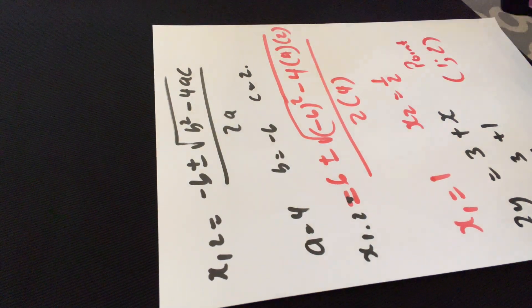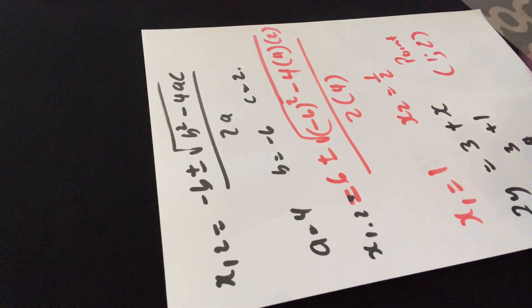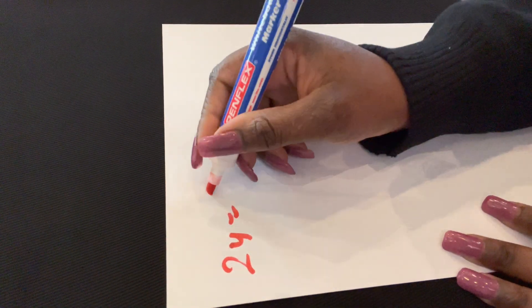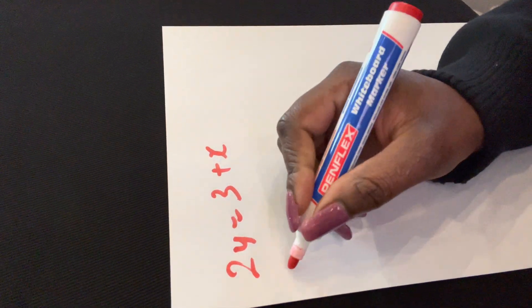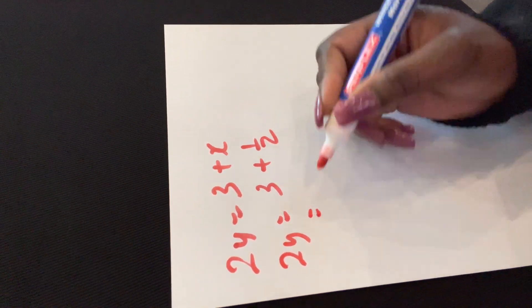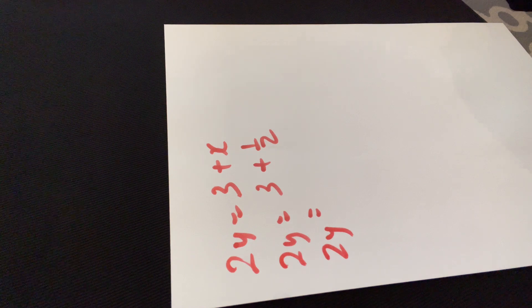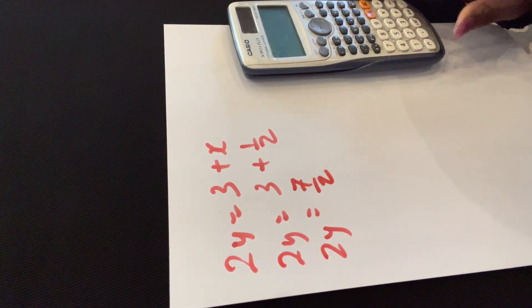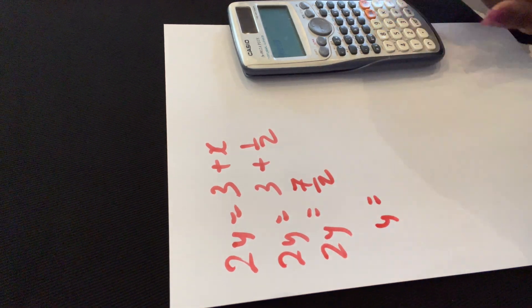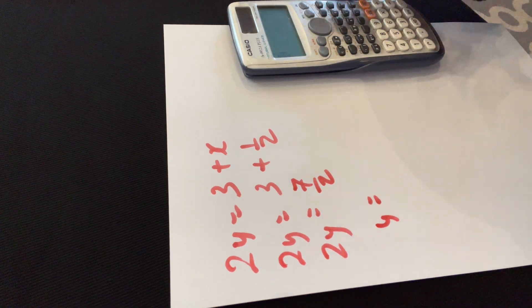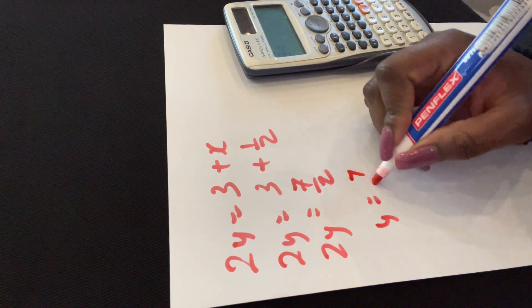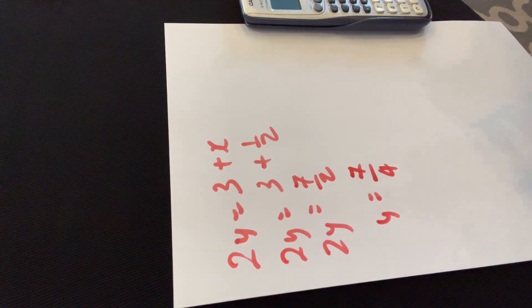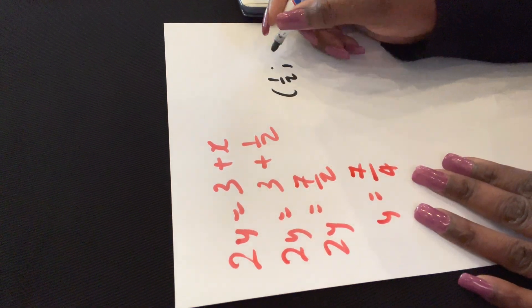Taking the same equation and substituting y = 1/2: 2(1/2) = 3 + x gives 1 = 3 + x, so x = −2. Wait — using equation 3: x = 2y − 3. When y = 1/2, x = 2(1/2) − 3 = 1 − 3 = −2. And substituting into equation 1: 2y = 3 + x. When x = 1/2 (the speaker's value), 2y = 3 + 1/2 = 7/2, so y = 7/4.